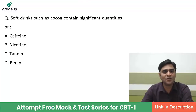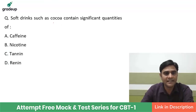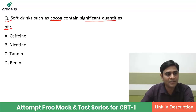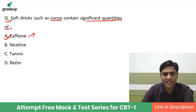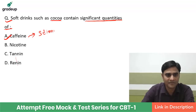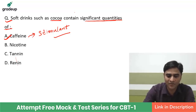Soft drinks such as Coca-Cola contain significant quantities of which substance? The options are caffeine, nicotine, tannin, or renin. Your answer should be caffeine, which is a stimulant that refreshes your mood and is present in soft drinks like Coca-Cola.